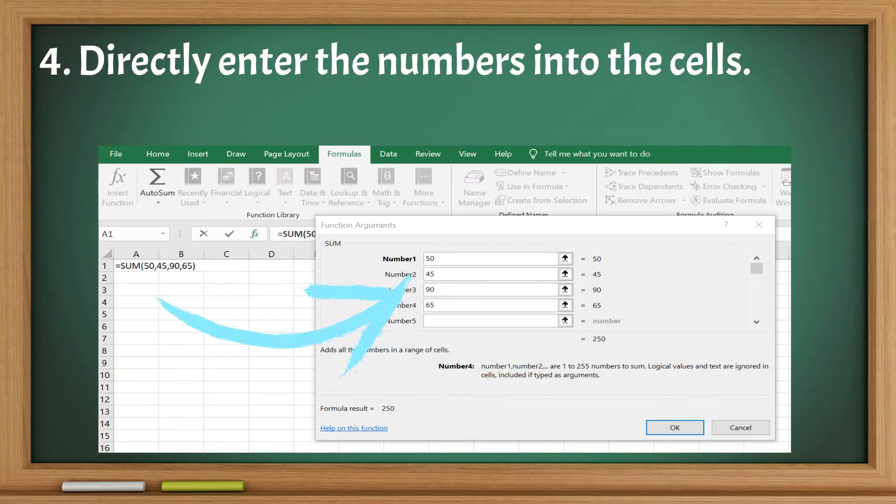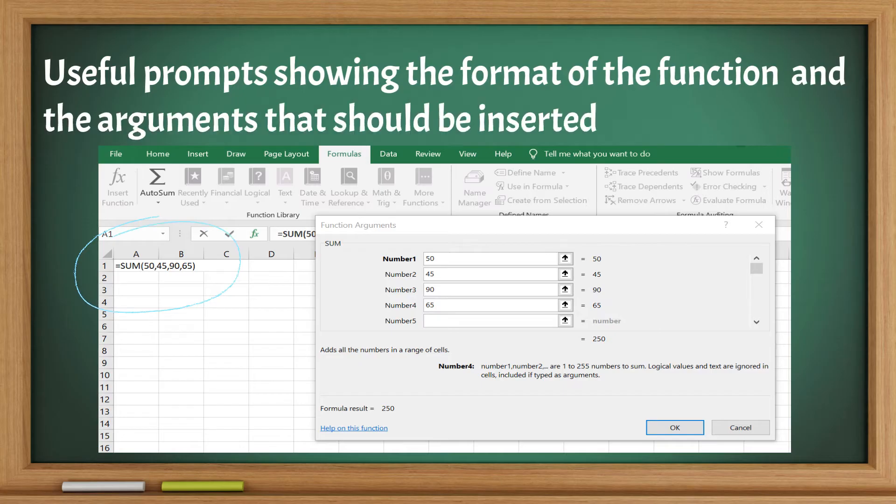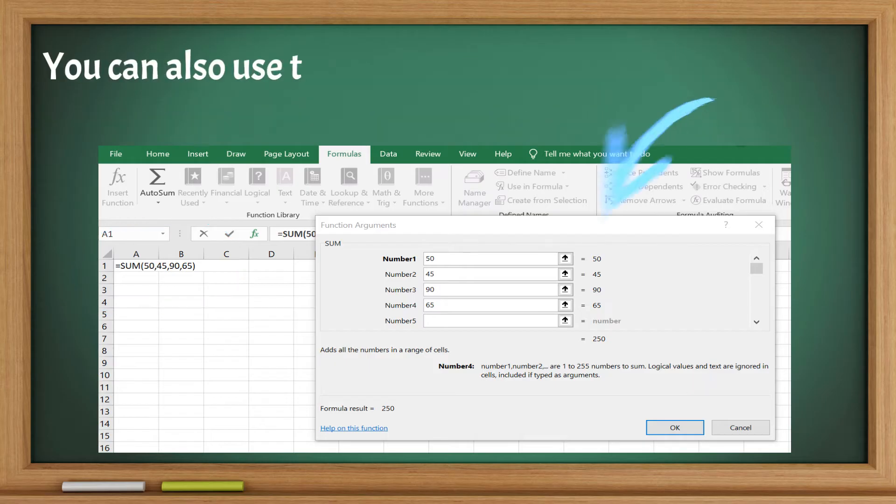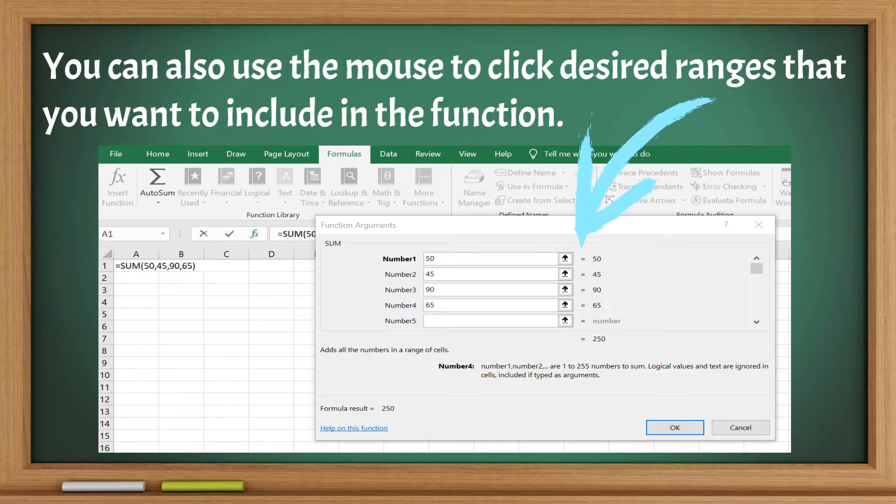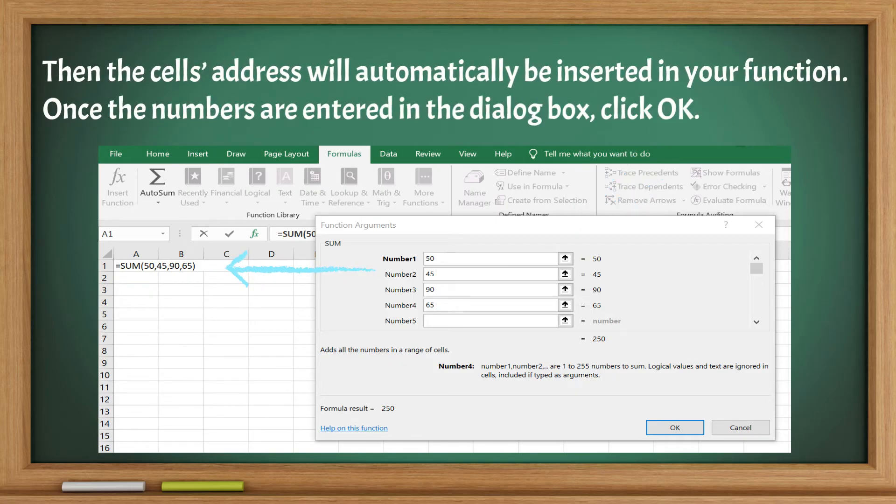Directly enter the numbers into the cells. Useful prompts showing the format of the function and the arguments that should be inserted will appear. You can also use the mouse to click desired ranges that you want to include in the function. Then the cell's address will automatically be inserted in your function.